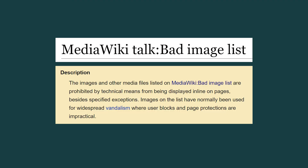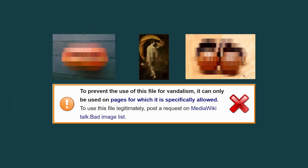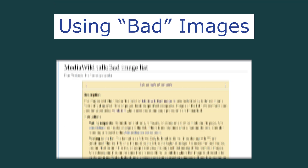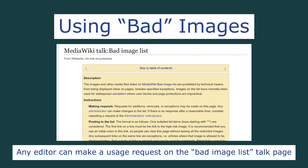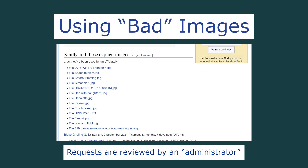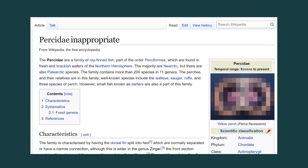Images on this list cannot be displayed inline on pages unless given an exception. Images are given the restricted use template and link back to the Bad Image List for information. Any editor can make a request on the Bad Image List talk page to use an image from this list. If an administrator approves the request, the image will be granted a page-specific exemption, and then the editor can place the image on the appropriate Wikipedia page.